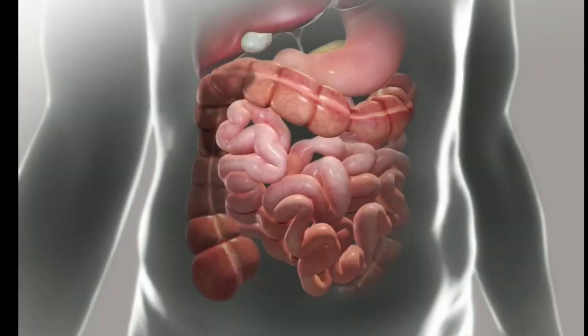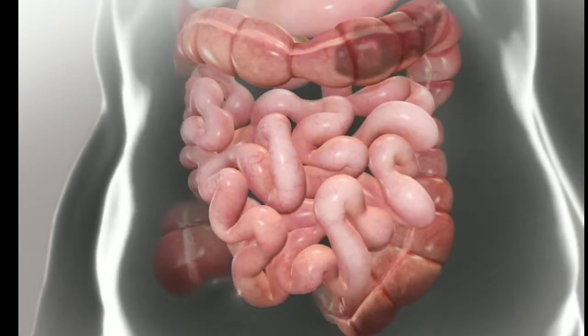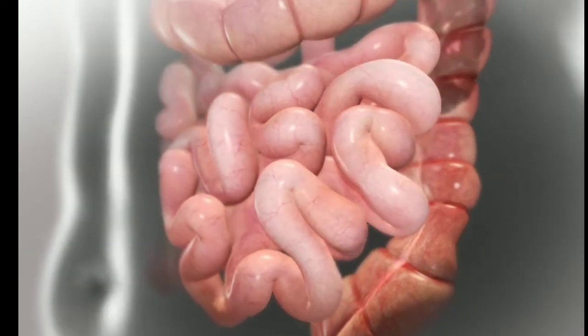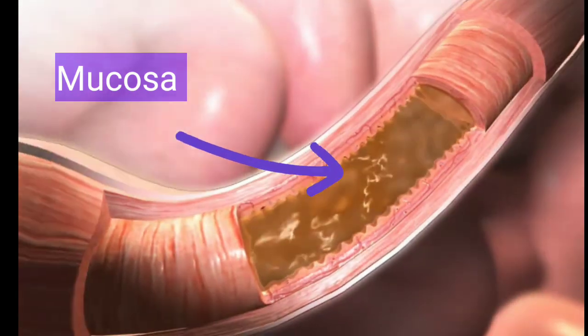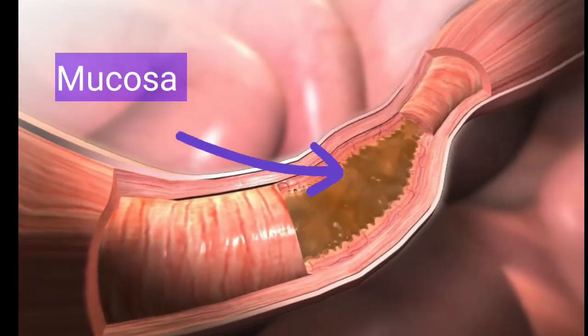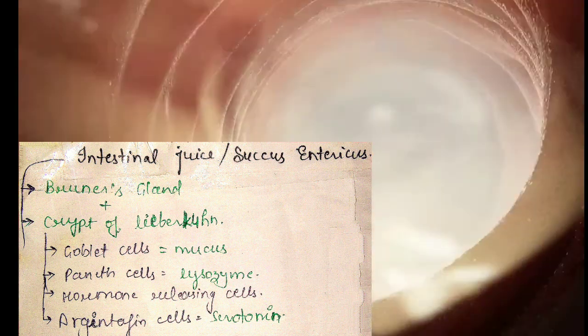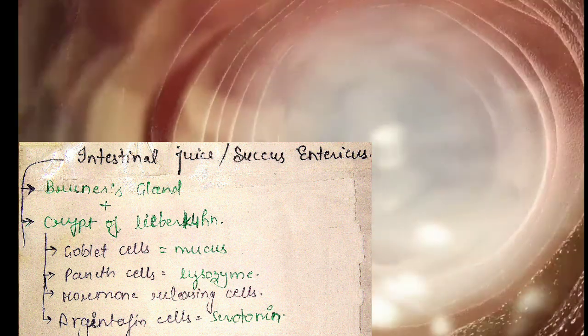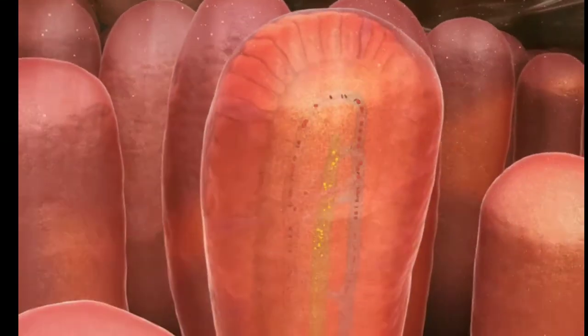After pancreatic juice, the intestinal juice or succus entericus is also added to the food, which is released from the Brunner's glands present on the outer lining of the duodenum and crypts of Lieberkühn, which is present as a mucosal layer of the whole small intestine, and have cells like goblet cells which release mucus, Paneth cells which release lysozyme, enzyme and hormone-releasing cells, and argentaffin cells which release serotonin that causes contractions in the gut.